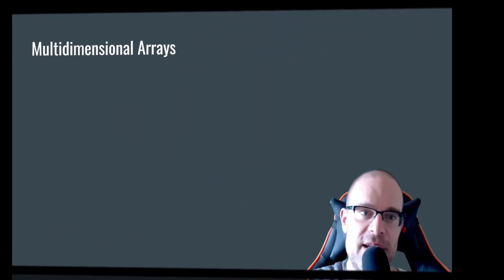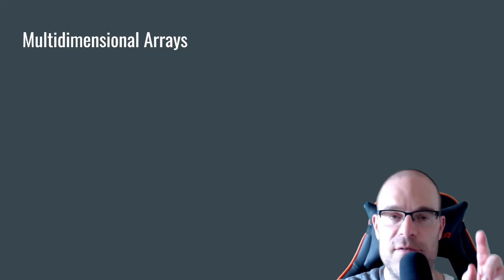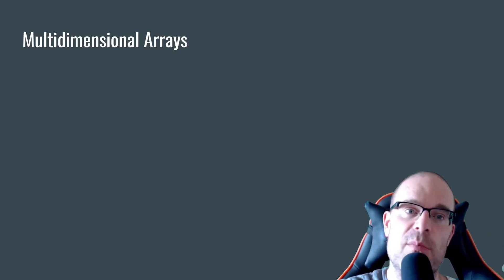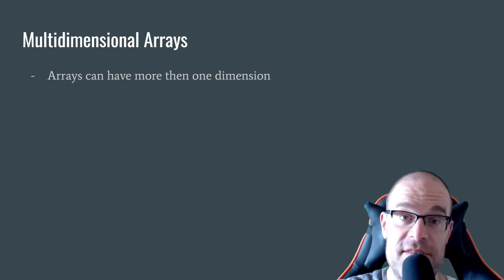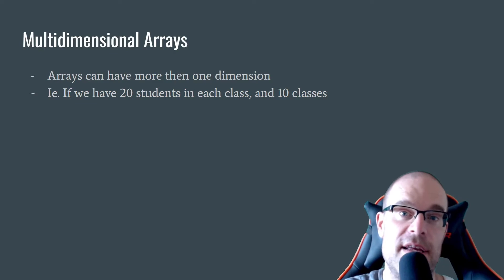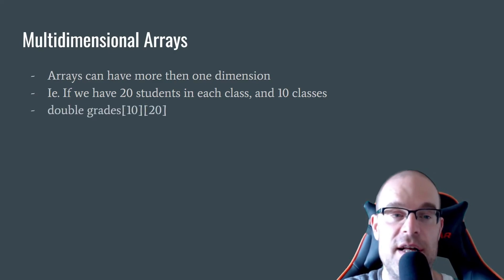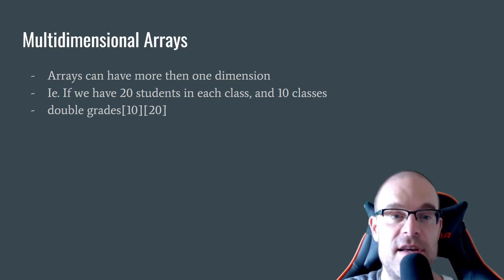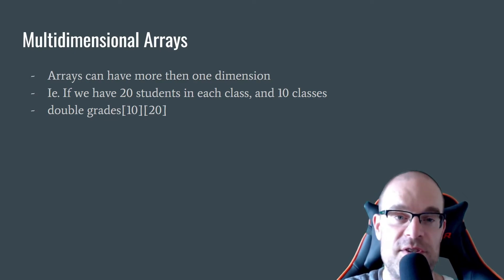Let's continue on and learn about multidimensional arrays. We've gone through what we call single-dimension arrays — we have one set of square brackets. Now we're learning about multidimensional arrays. Arrays can have more than one dimension. For example, we could have 20 students in a class and 10 classes in that school. Here we have a declaration of a multidimensional array: double grades[10][20] — 10 is for how many classes and 20 is how many total students we have in each class.